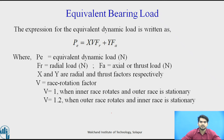V is the race rotation factor, depending on which race is rotating. There are two races: one is the inner race and another is the outer race. If the inner race rotates and the outer race is stationary, we consider V = 1. If the outer race rotates and the inner race is stationary, we consider V = 1.2. This is the expression for finding the equivalent bearing load.